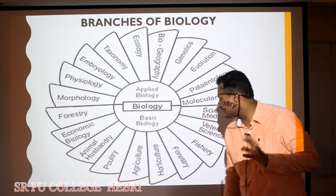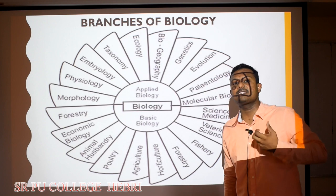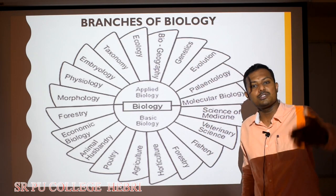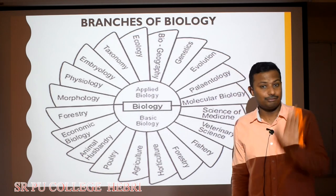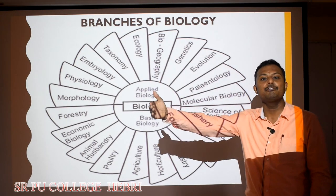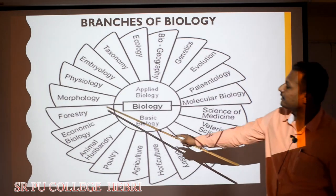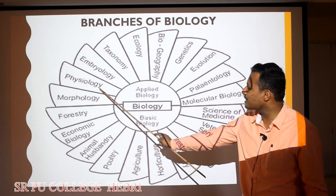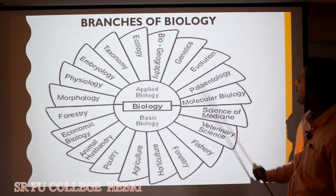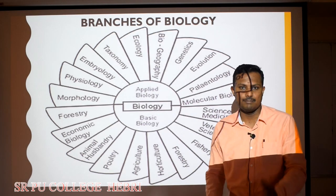For example, by understanding the biology of a cow, we can plan how to extract maximum milk from it. By understanding how a crop plant grows under different environmental conditions — that is basic biology — we can then think of increasing yield from that plant, which is applied biology. Basic biology branches include morphology, physiology, embryology, taxonomy, ecology, biogeography, genetics, evolution, paleontology, and molecular biology.